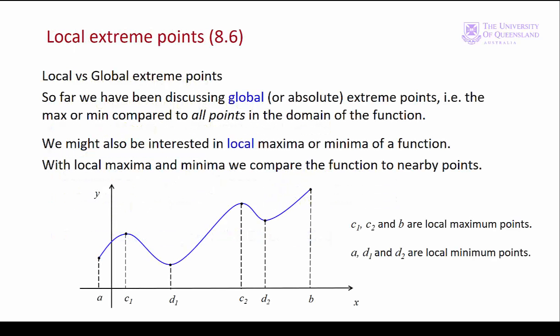Local maxima and minima are local peaks and valleys in the value of the function. We compare the value of the function at a point to other nearby values. In this diagram, D1 is the global minimum and B is the global maximum. On the other hand, C1, C2 and B are all local maxima, and A, D1 and D2 are local minima.